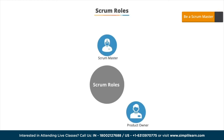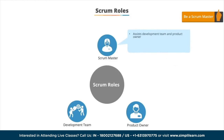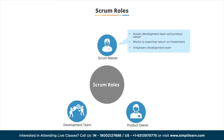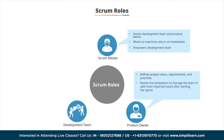There are three distinct roles in scrum: the scrum master, the product owner, and the development team. The scrum master assists both the development team and the product owner, working with the product owner to maximize return on investment. The scrum master empowers the development team by fostering creativity, removing impediments, and coaching and mentoring as appropriate. The product owner is responsible for project success by defining the project vision, requirements, and priorities.